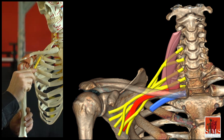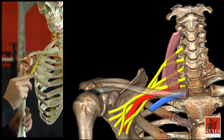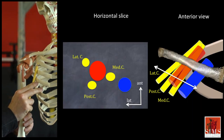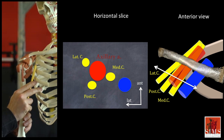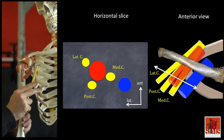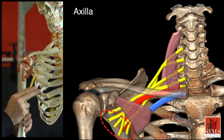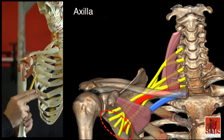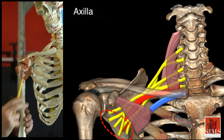We enter the costoclavicular space and then the pectoralis minor tunnel. Here the cords are arranged according to their names, around the axillary artery. The lateral cord is lateral, the posterior cord is posterior, and the medial cord is medial. Below the pectoralis minor tunnel, they branch out, giving rise to the terminal branches, which we are going to describe in the technique portion of this video.